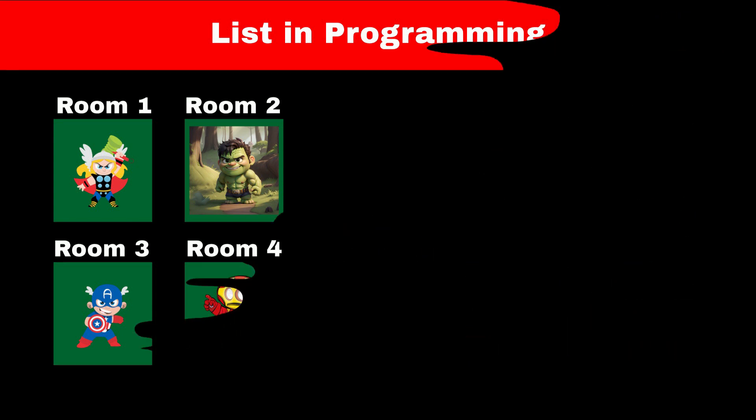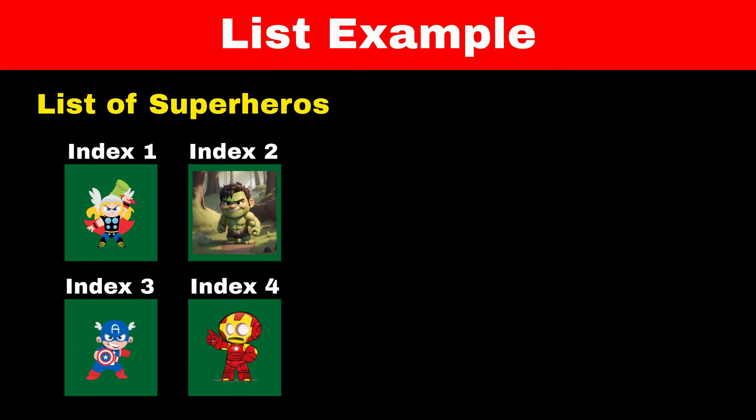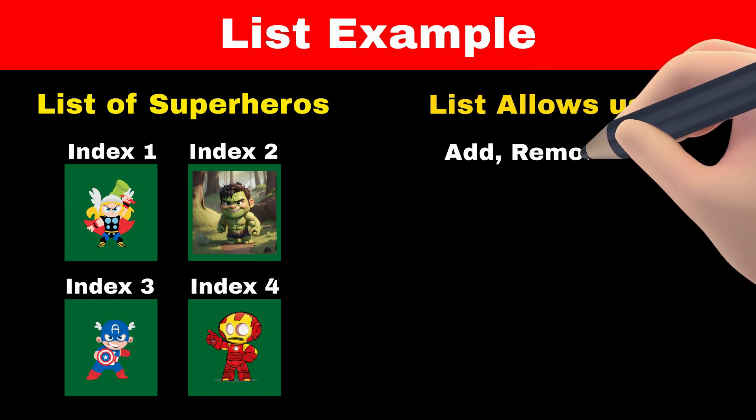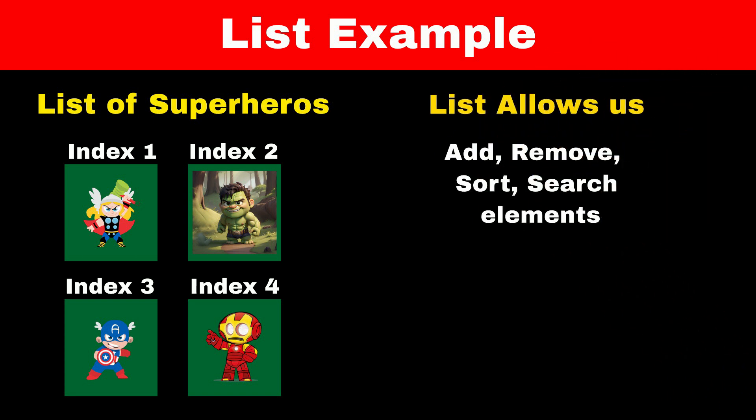For example, if we have a list of superheroes, we can access Thor by using its index, which is 1. We can also add or remove any elements from the list, and we can sort elements in the list.